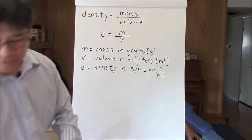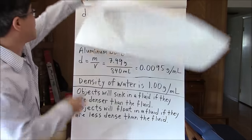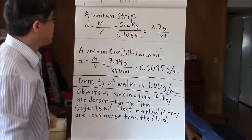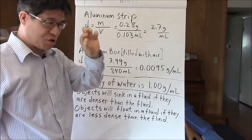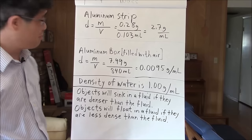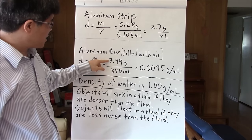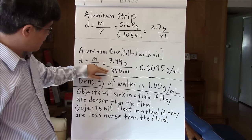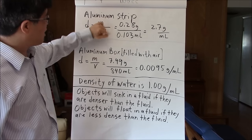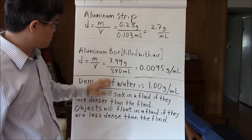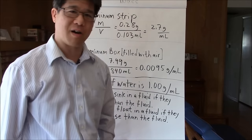Things that are more dense have more matter crammed into the same amount of space. The aluminum strip had a mass of 0.28 grams and a volume of 0.103 milliliters, giving a density of 2.7 grams per milliliter. The aluminum box had a volume of 840 milliliters and a mass of 7.99 grams — volume almost a hundred times greater than the mass — giving a density of 0.0095 grams per milliliter.